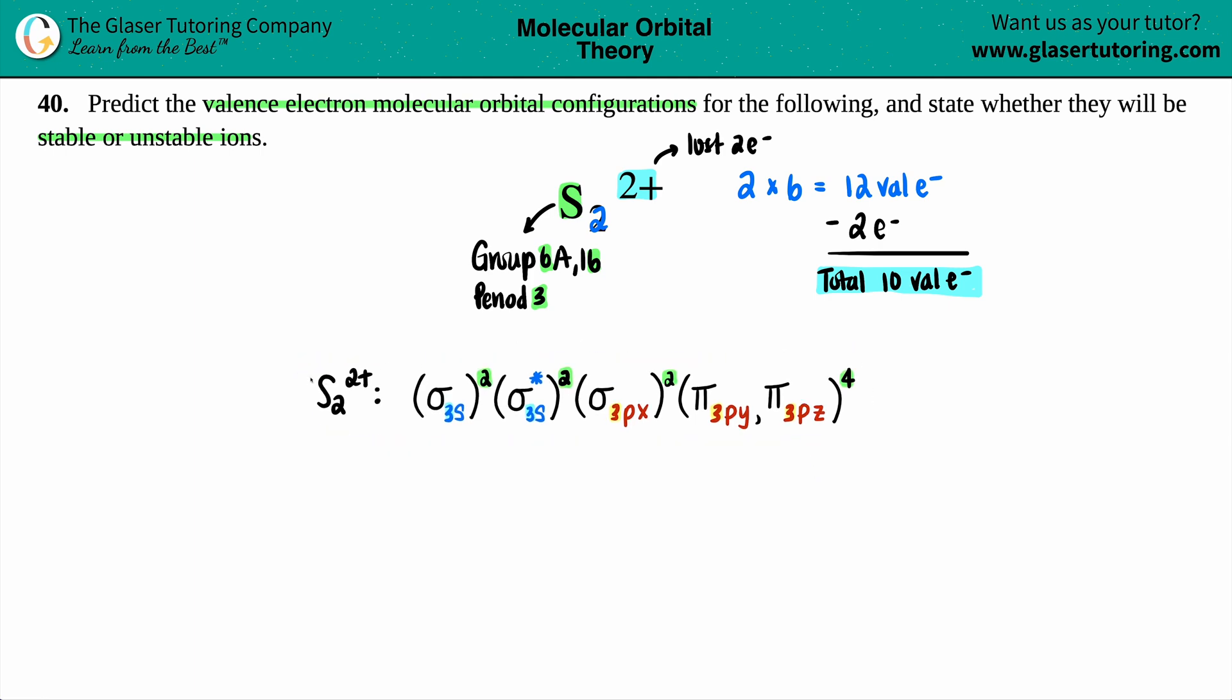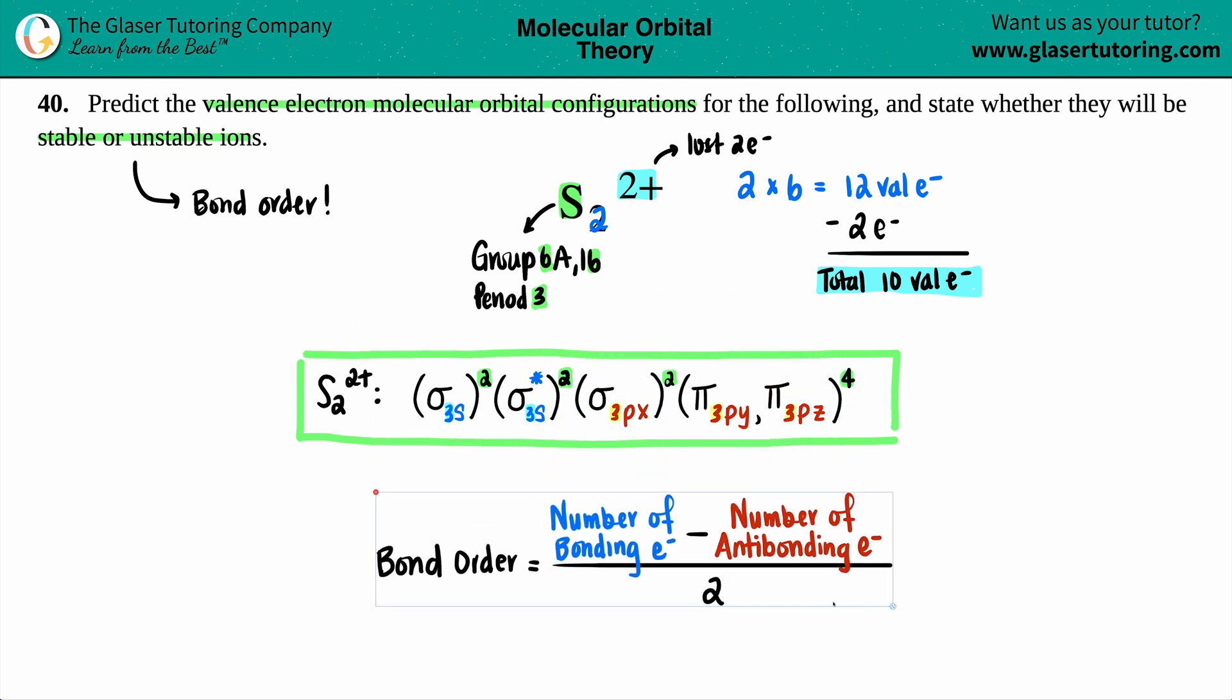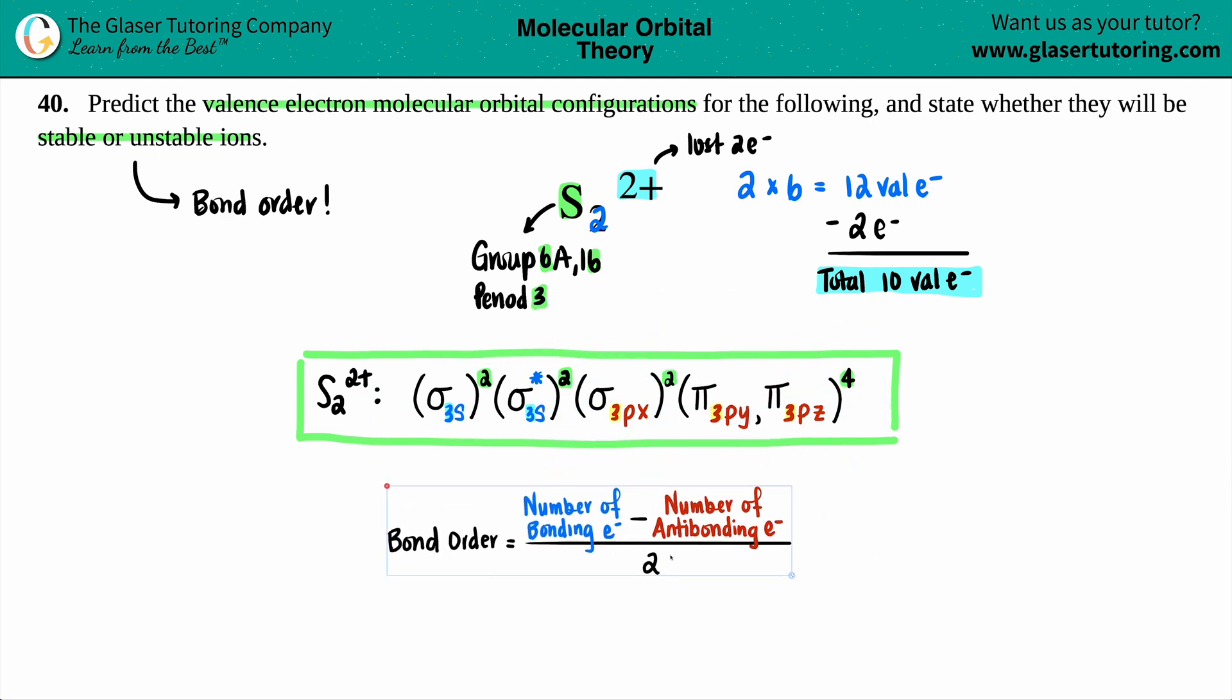And now this is the valence electron molecular orbital configuration. From this information, we have to figure out is this a stable or an unstable ion. Basically, if they're asking for molecular orbital configurations and then they're asking for stability, they want you to find the bond order, because the bond order number will tell you if you will actually form a bond. The formula for bond order is pretty simple - it's just two things subtracted by each other divided by two. So bond order is your total number of bonding electrons minus your antibonding divided by two.